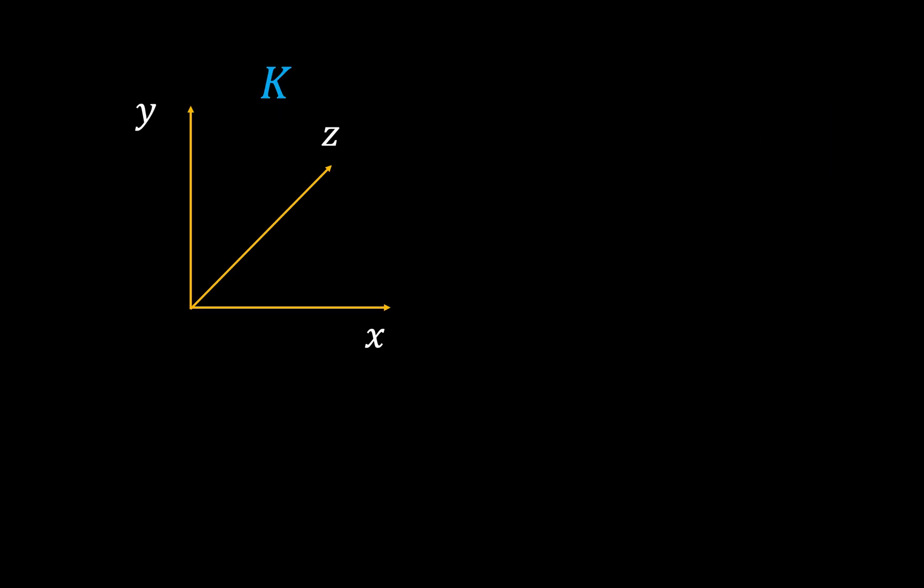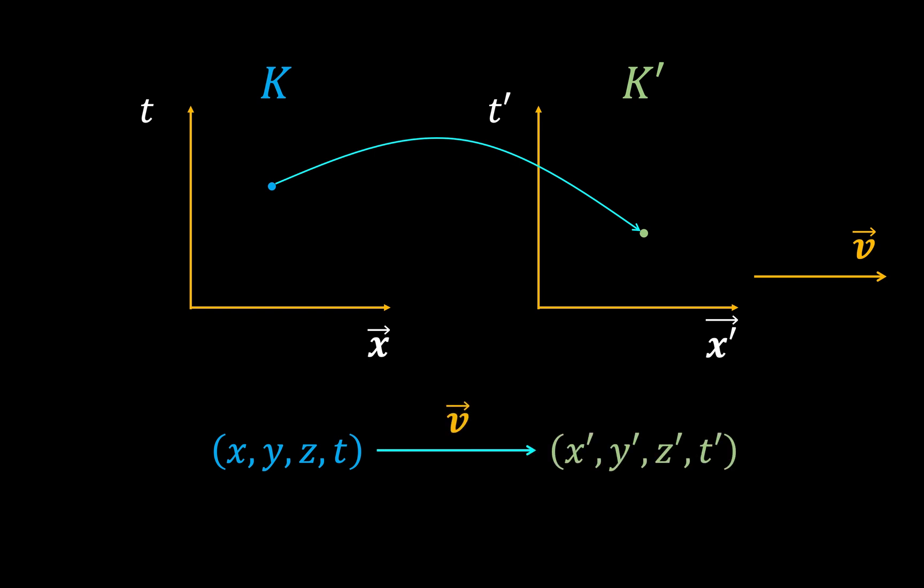Imagine that we have some coordinate system K. Now imagine that we have a second coordinate system K' that is moving at a constant velocity with respect to K. Let's say that we have some event in K, which is just characterized by a set of space and time coordinates. The present question is: how do we transform these coordinates so that we can capture how the event is seen in the K' reference frame, given that it moves at some given velocity?